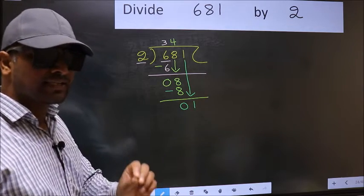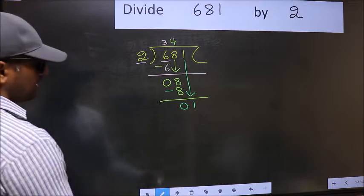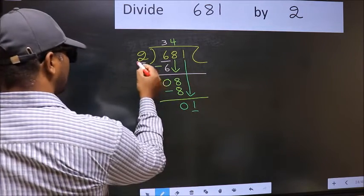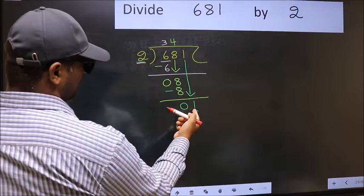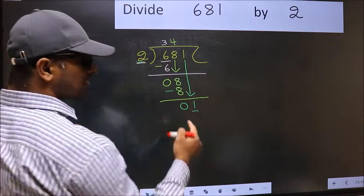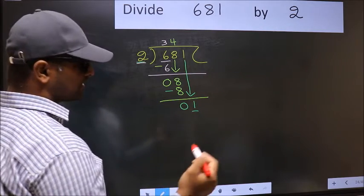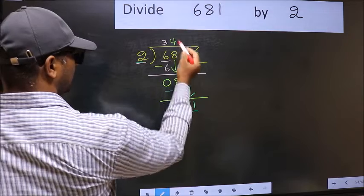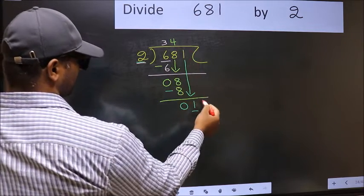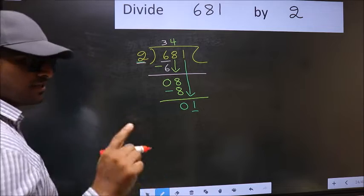And the mistake is this. Here we have 1. And here 2. 1 is smaller than 2. So, what many do is, they directly put a dot and take 0. Which is wrong.